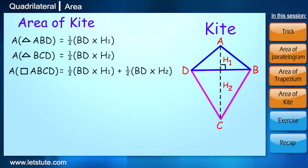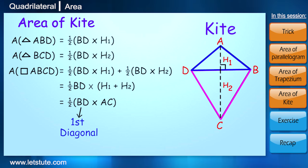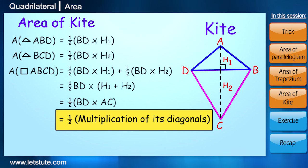So we can take half and the base outside of the bracket, so we will get half times BD into h1 plus h2. Now what is h1 plus h2? Addition of these two heights becomes the diagonal of the kite. So here BD is the first diagonal, and h1 plus h2 is AC, which is the second diagonal. So we say that area of a kite is half times multiplication of its diagonals, or half times product of its diagonals.